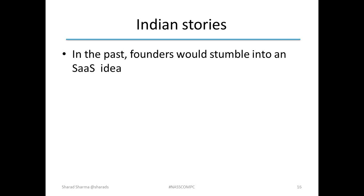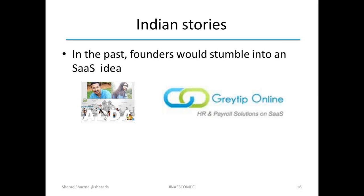We have our own success stories where people have stumbled into this. There is a success story about Apartmentadda where Venkat stumbled into the idea because he bought an apartment, discovered his building society didn't have a good solution, hacked it together, and has now managed to turn it into a very viable business. This happened with Greytip as well, where they are doing payroll processing for 10 rupees per employee per month. What is different now is that this whole process is becoming a science. Instead of stumbling around and taking a lot of time to discover that idea, you can accelerate the whole process if you embrace a disciplined approach.